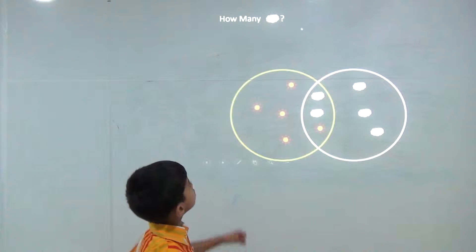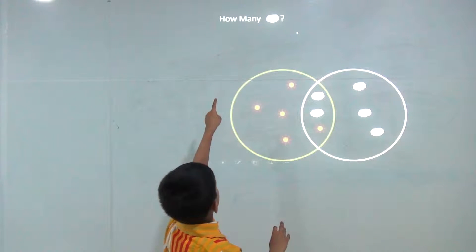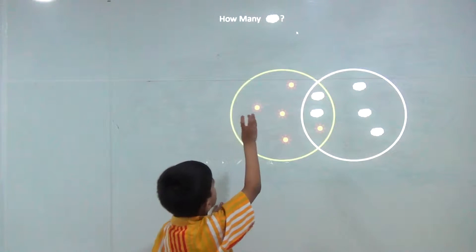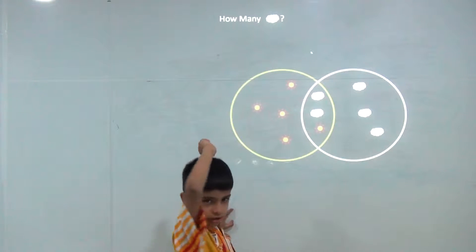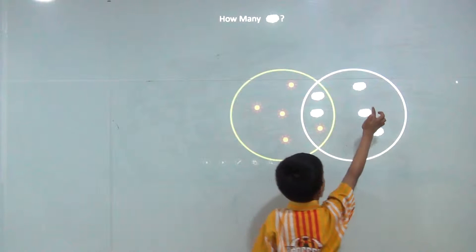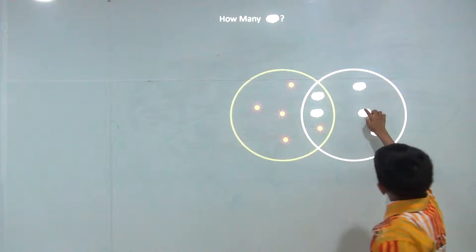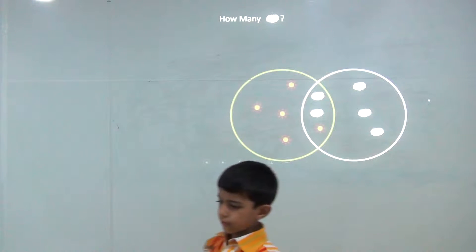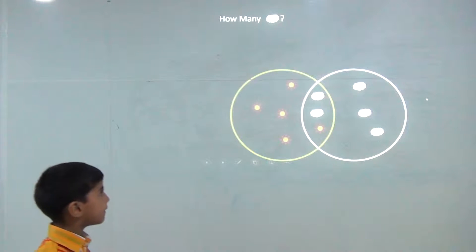There is a question: how many clouds are there? Let's count — one, two, three, four, five. So the answer would be five.